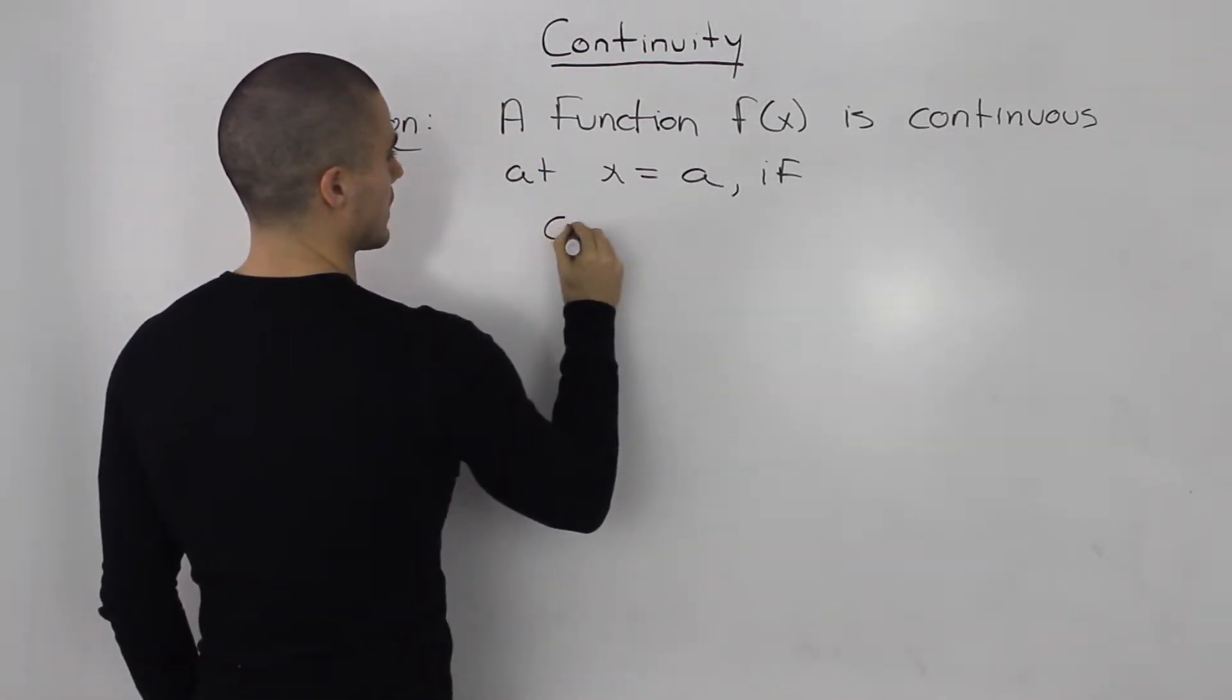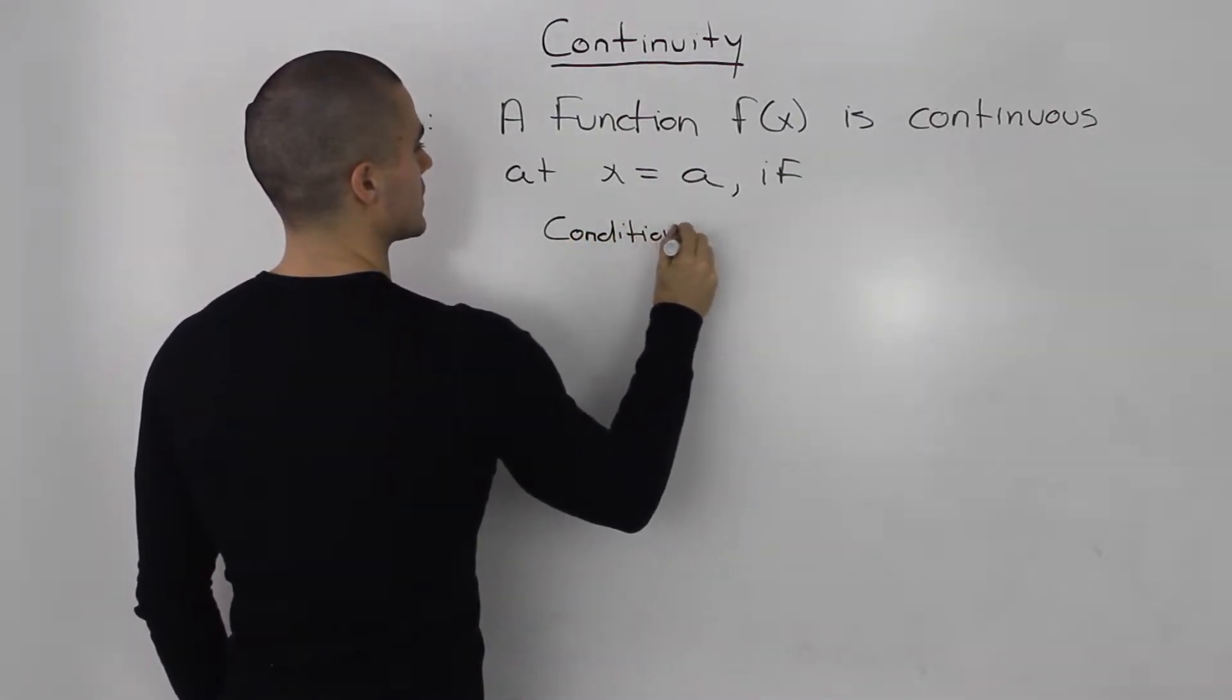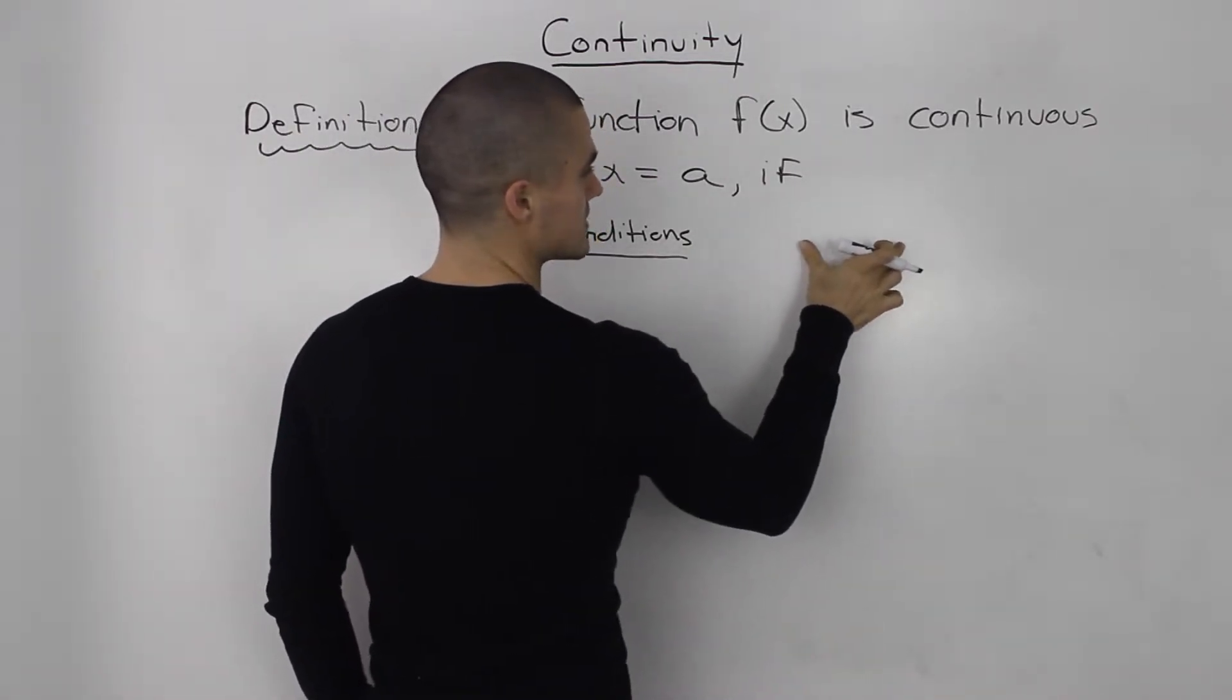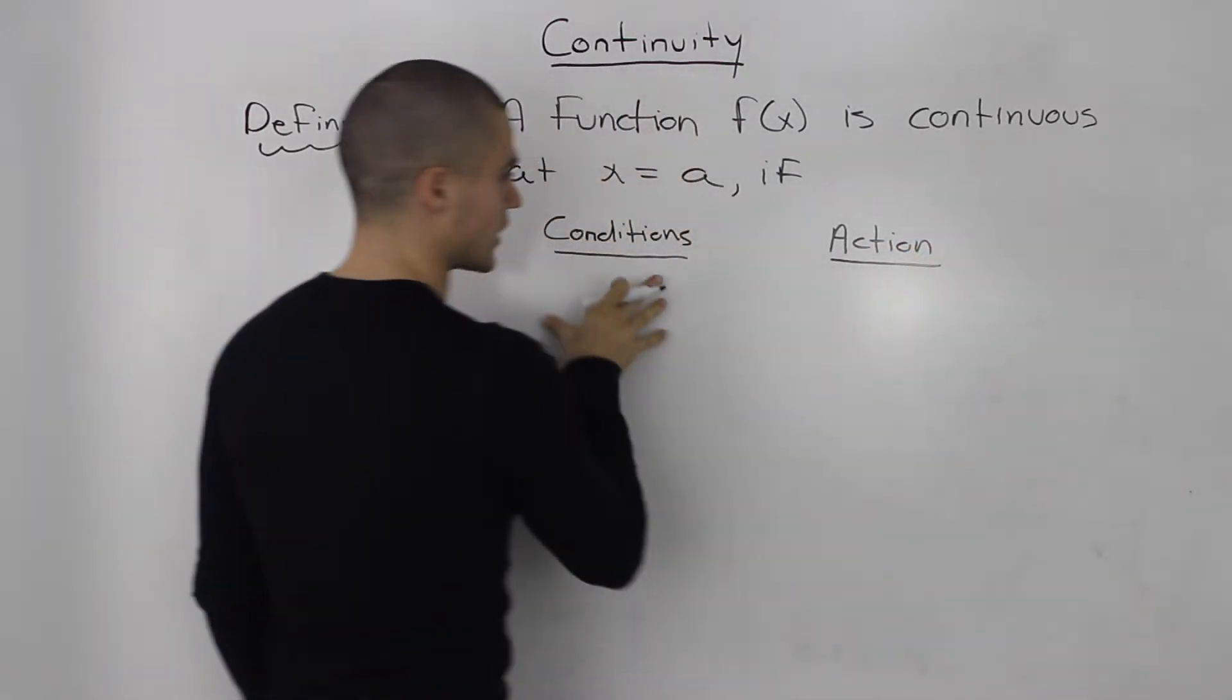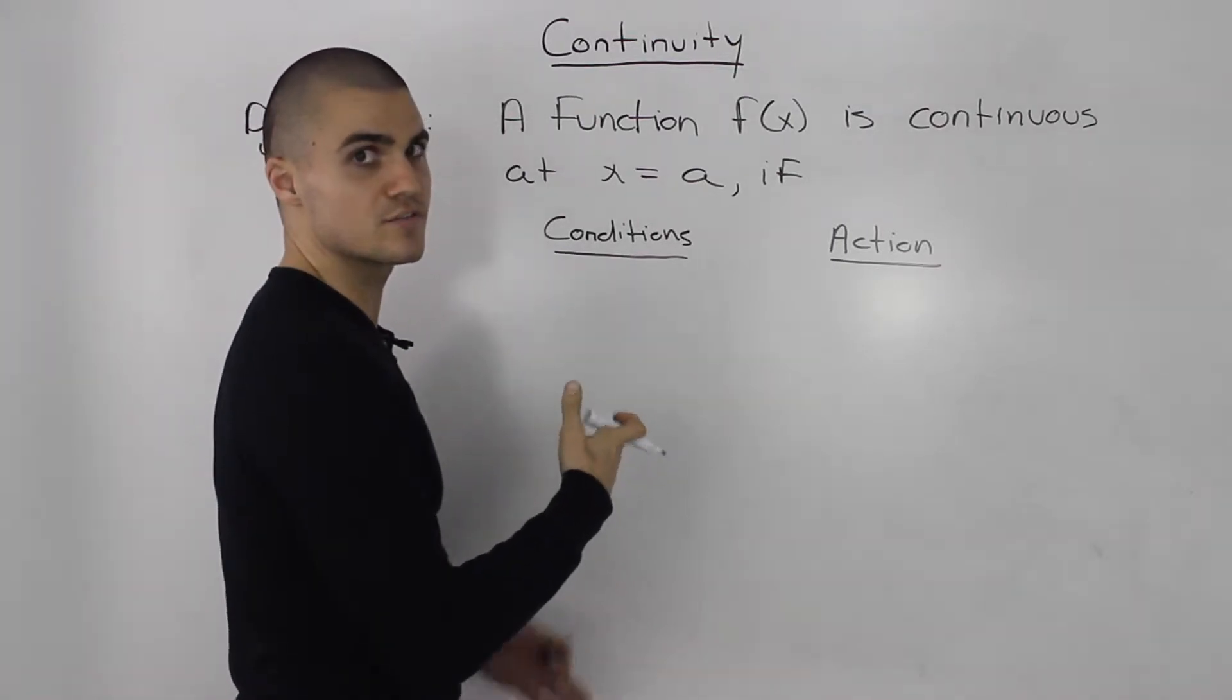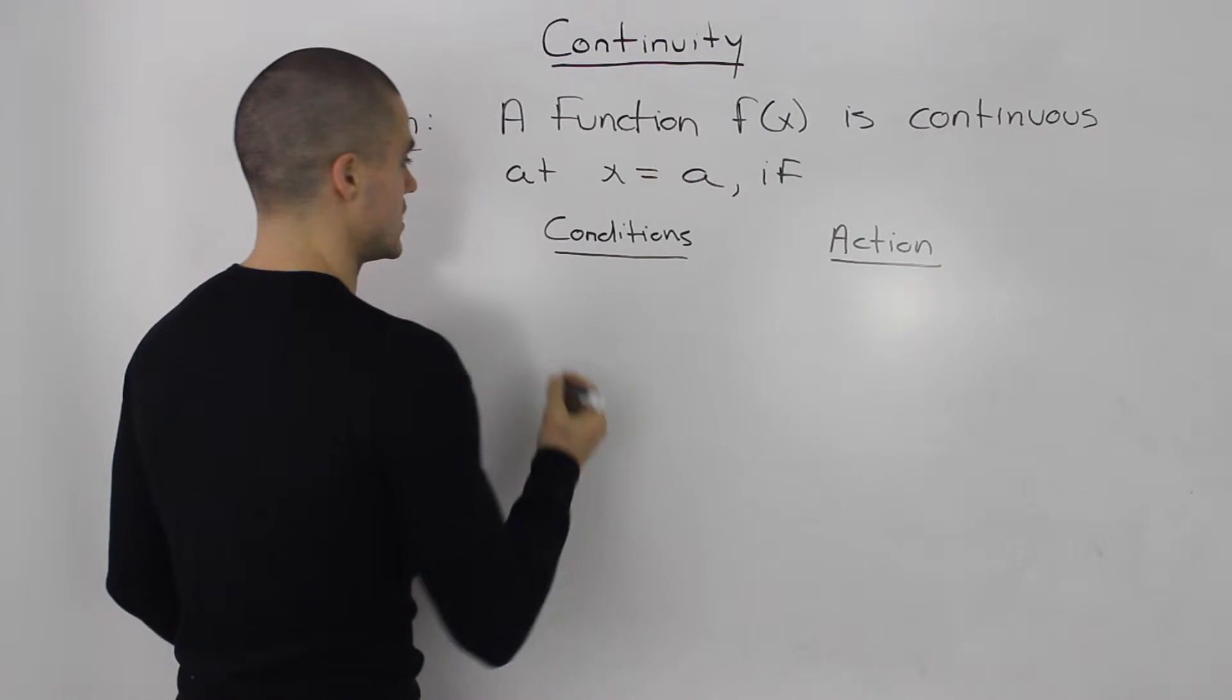I'm going to write in one column the three conditions, and for each one I'll tell you what the action is to prove that condition. Whenever a question asks you if a function is continuous, you've got to prove each of these three conditions.